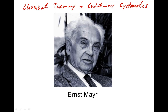Mayr read Hennig's book and said, essentially, you young people aren't interested in all the processes of evolution — you're just interested in branching evolution, you are just cladists. The people interested in phylogenetic systematics took this word, which was meant as an insult, and embraced it, saying that's absolutely right — we are only interested in cladogenic change. And so phylogenetic systematics came to be called cladistics by basically everyone, even Ernst Mayr, who coined the term.